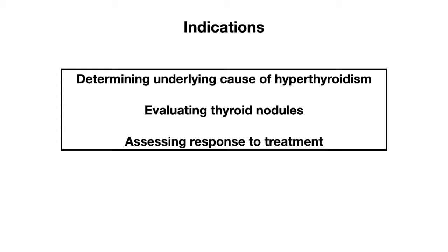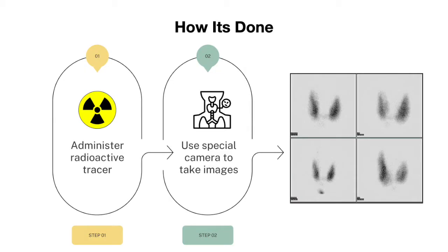Before we go over some cases, let's briefly go over how a thyroid scan is done. It's first done by administering a radioactive tracer, either orally or intravenously. We then use a special camera to take images of the thyroid gland, and it produces images like the ones you're seeing on the slide here. In these images, you'll see the two lobes of the thyroid gland, as well as how the gland is responding to the radioactive tracer.